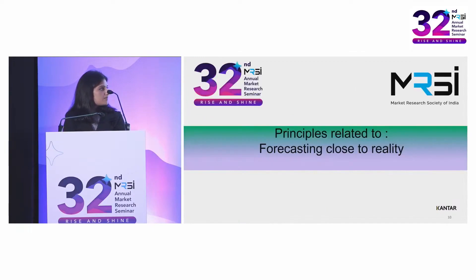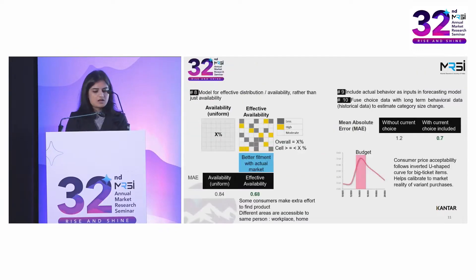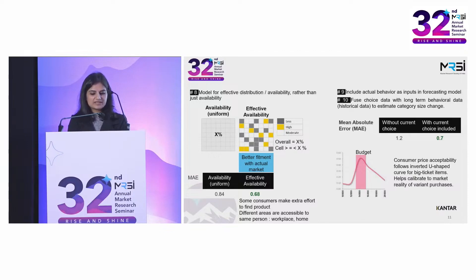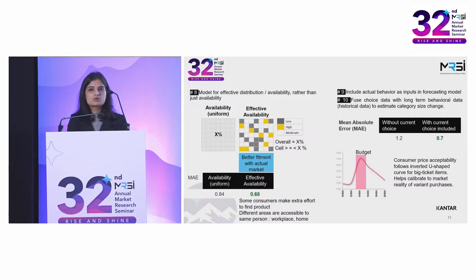Next, we cover principles related to bringing the forecasts closer to reality. In every category, availability or distribution impacts sales, and it is usually incorporated in all market forecasts. What we believe is that every consumer has their own effective distribution, because some of them are willing to make an extra effort to find their favorite product, and also different areas of a city are accessible to the same person. If you build this into your forecasting model, it will align the results closer with real life.